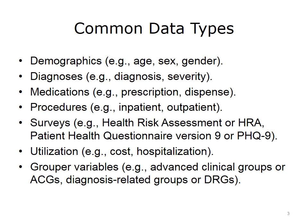Utilization information, such as cost, hospitalization, admission to ER, readmission, and so on. And finally, a set of derived variables that categorize other variables into meaningful groups. These grouper variables are often generated by a variety of commercial and non-commercial applications. There is a long list of grouper data types, including advanced clinical groups (ACGs), diagnosis-related groups (DRGs), and others. In this lecture, we will focus on surveys, utilization, and grouper data types.